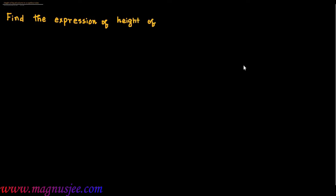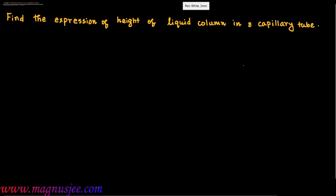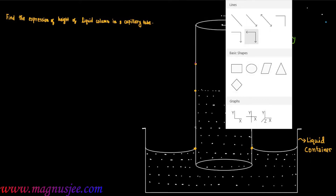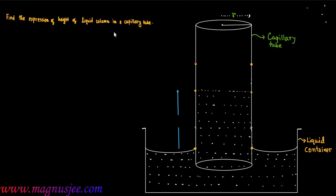Find the expression for the height of a liquid column in a capillary tube. We consider a capillary tube of radius r immersed in a container full of liquid. In this case, the liquid rises up to height h through the capillary tube with respect to the liquid in the container.